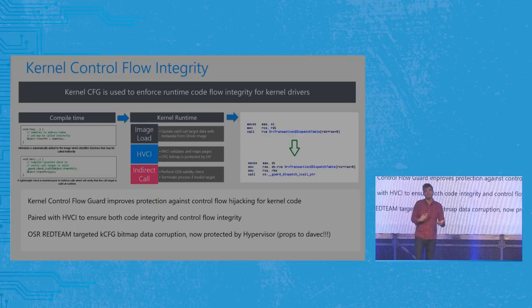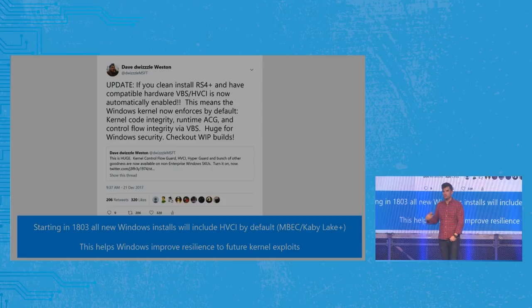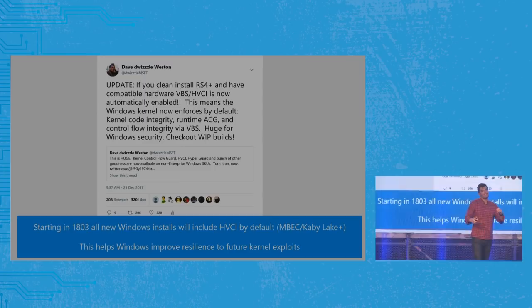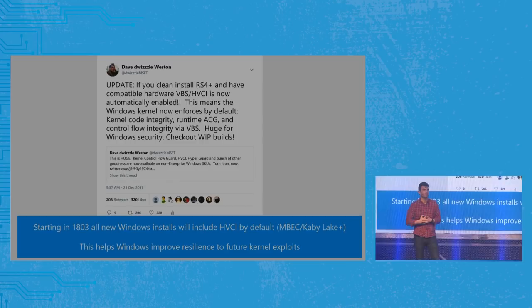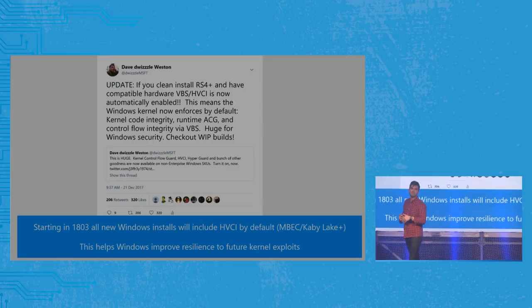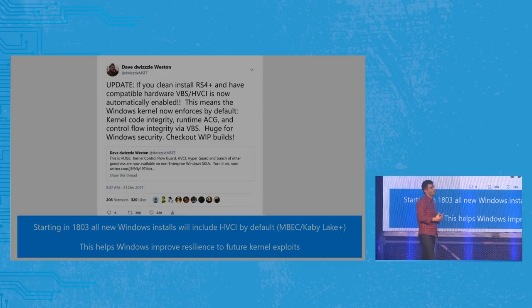Because we know this is so important, we've enabled Virtualization Based Security by default in all Windows SKUs for the upcoming version of Windows. If you get a new PC with MBEC — currently Kaby Lake and above Intel systems — there's no performance hit and we enable this by default. This used to be enterprise-only and not on by default. Windows 10 stayed ahead of EternalBlue and the WannaCry attacks, and we're really betting on this technology to stay ahead of attackers for the next generation.